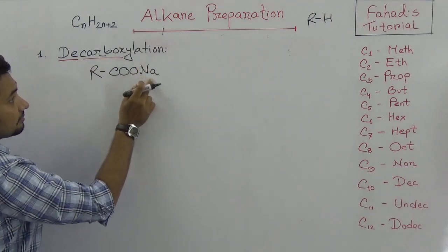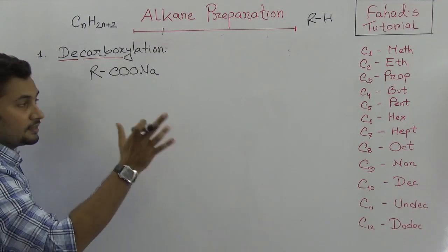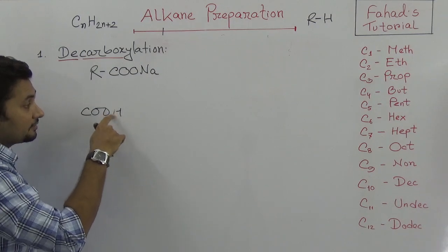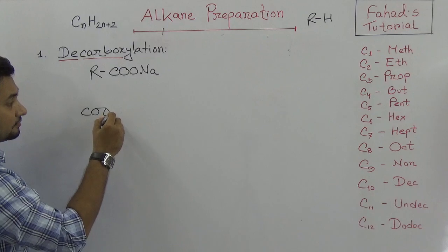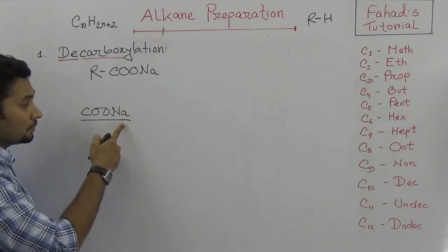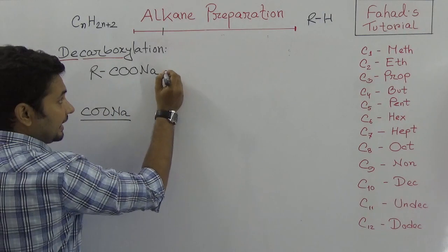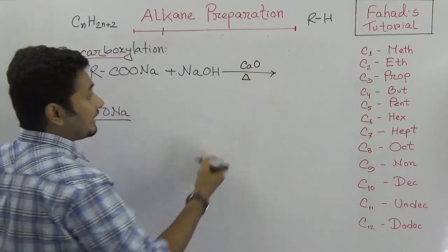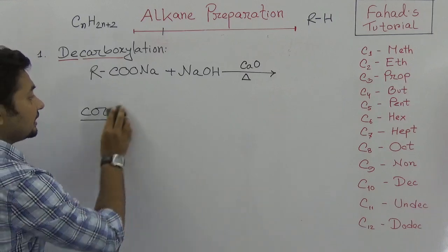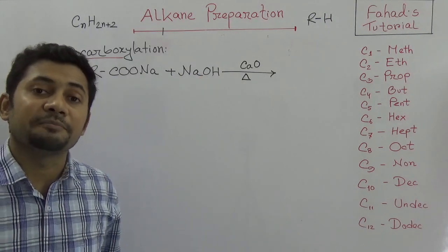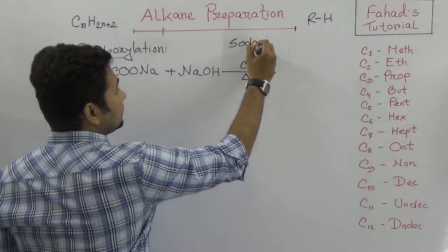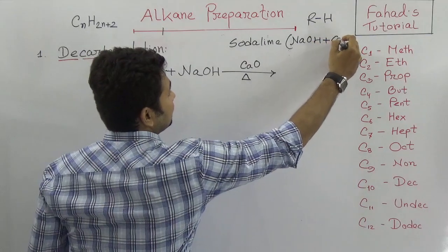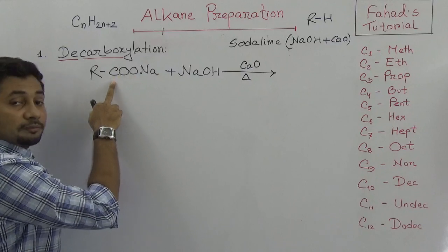The general formula involves R–COONa, which is sodium carboxylate. Here R is the alkyl group. The R–COOH form is a fatty acid or carboxylic acid; when hydrogen is substituted by sodium, it becomes sodium carboxylate. When sodium carboxylate is added with sodium hydroxide and calcium oxide — which together is called soda lime — and heated, a reaction occurs.